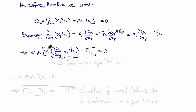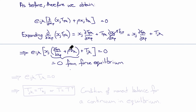We notice that the term ∂Tpk/∂xp plus rho Bk is actually the force equilibrium equation — the divergence of the stress plus the body forces. From the force equilibrium equations we just derived, this term is zero, so we are left with Eijk times Tjk equals zero.